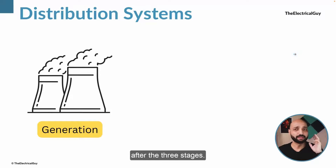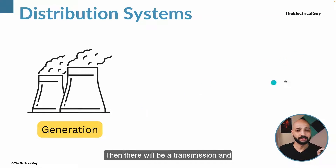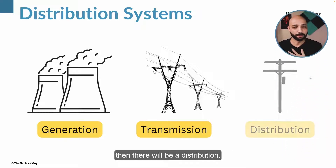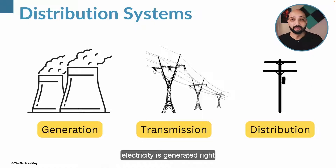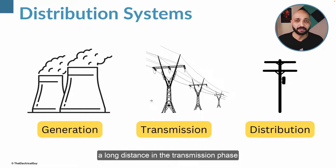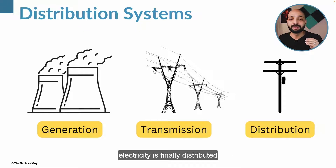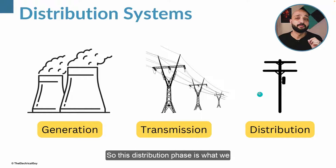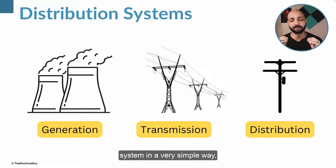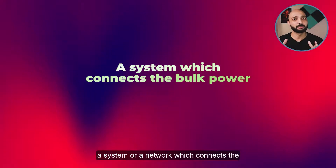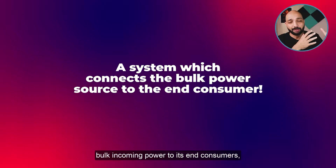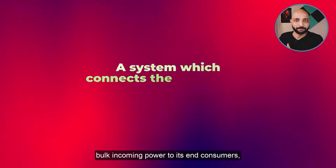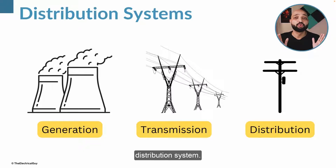Electricity reaches us after three stages. The first stage is generation, then there is transmission, and then there is distribution. In generation the electricity is generated, then it is transmitted over a long distance in the transmission phase, and finally in the distribution phase the electricity is distributed to its end user. So the distribution phase is what we call the distribution system — a system or network which connects the bulk incoming power to its end consumers.